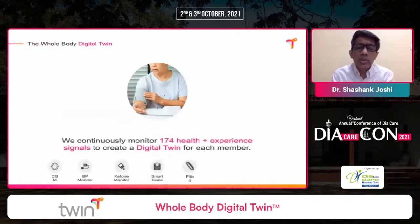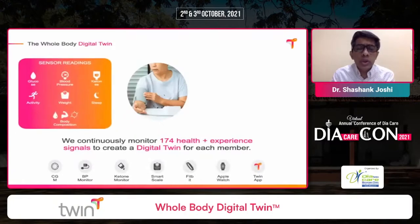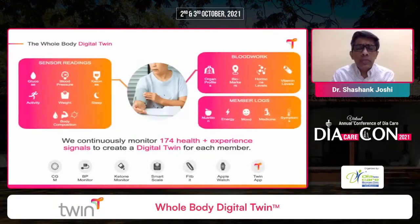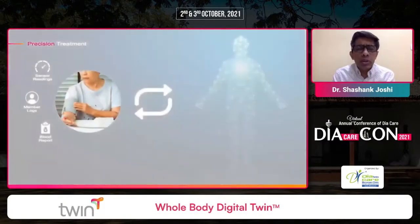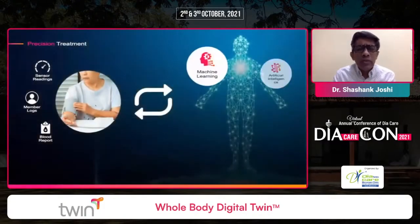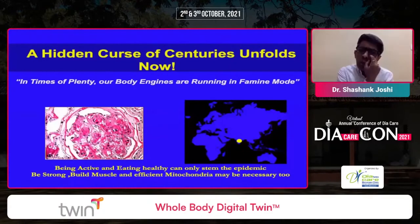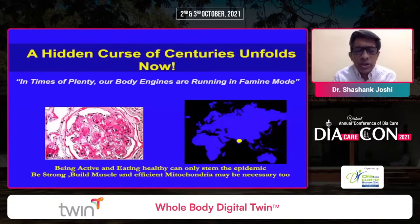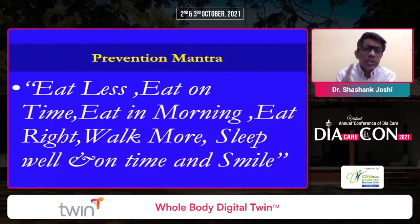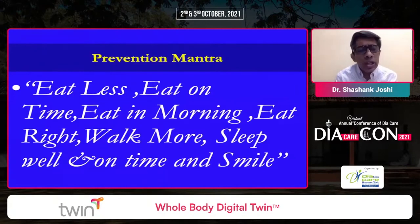Such diabetes reversal is doable, feasible, possible, and practical. We are in a new era where adherence is the most difficult challenge. Though we are born in times of plenty, our body engines are still running in famine mode. We need to be active, build strong muscles and mitochondria. Prevention is best: eat less, eat on time, eat in the morning, eat the right food, walk more, sleep well, and smile. But we can use artificial intelligence in a mindful way to attempt type 2 diabetes reversal.